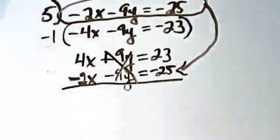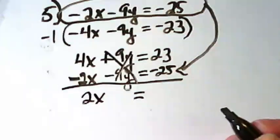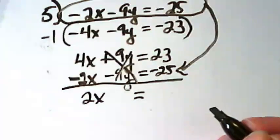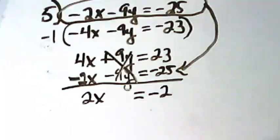4x minus 2x is going to give me positive 2x equals 23 minus 25, negative 2. I see another negative 1 in our lives happening.